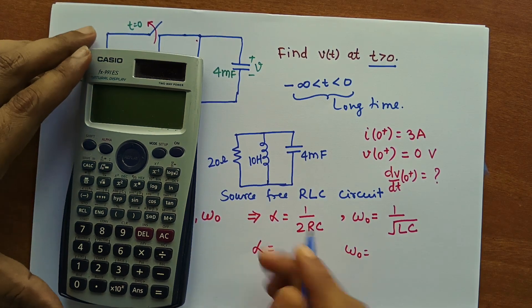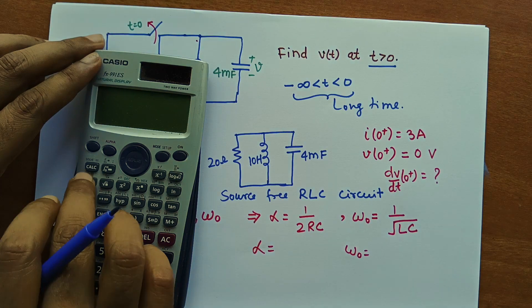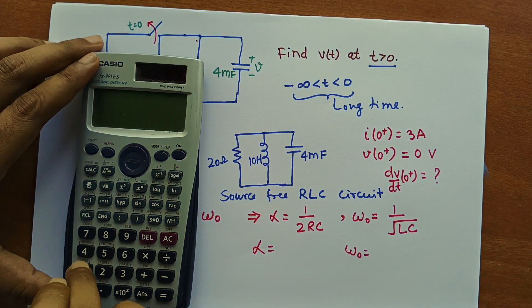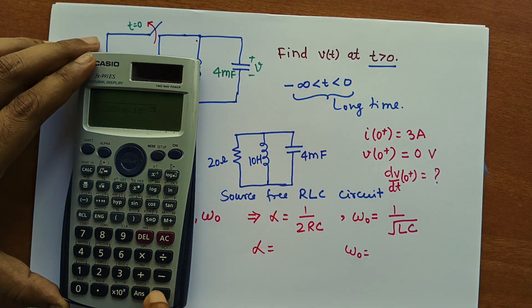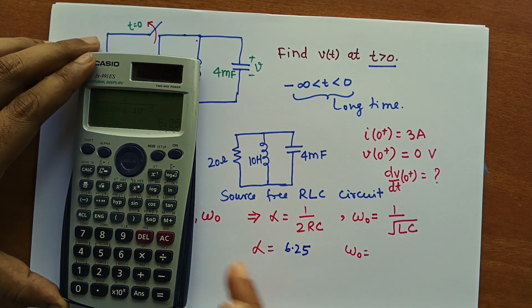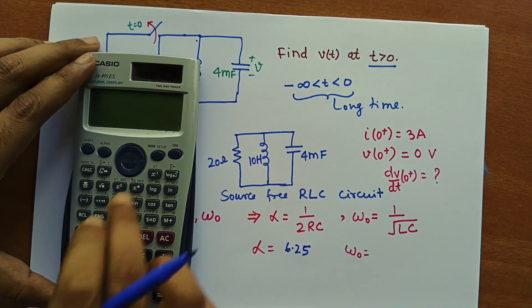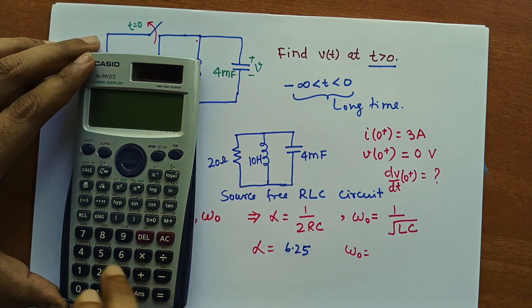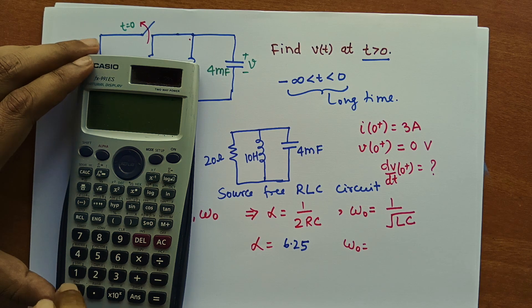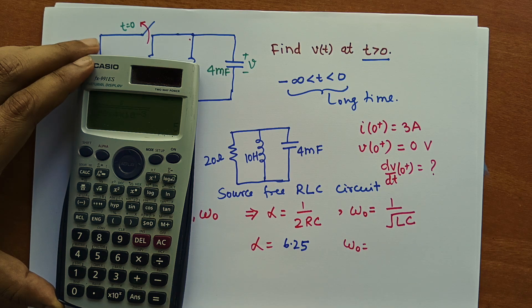We can put the values in: alpha equals 1/(2RC), so 1 divided by 2 into R = 20 ohm into C = 4 millifarad (10^-3). This equals 6.25. So alpha is 6.25. Then omega_0 is 1/√(LC), so 1 divided by the square root of L = 10 Henry into C = 4 millifarad (4×10^-3). This equals 5.